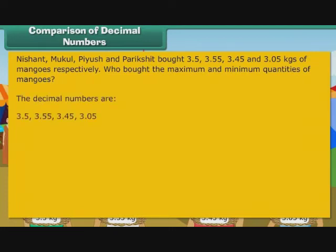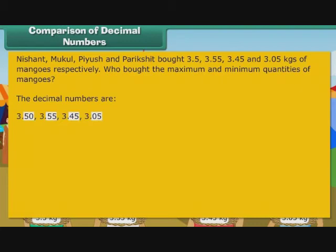The decimal numbers are 3.5, 3.55, 3.45, and 3.05. Let us rewrite the numbers so that all of them have the same number of digits after the decimal point: 3.50, 3.55, 3.45, 3.05. All the numbers have 3 to the left of the decimal point. Therefore, we arrange them on the basis of the digits after the decimal point: 50, 55, 45, and 05. We know that 55 is greater than 50, which is greater than 45, which is greater than 05.